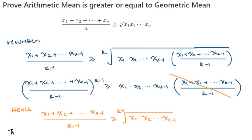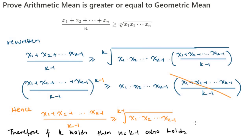Once we take the (k − 1)th root of both sides, we see that if the inequality is true for n equals k, then it's true also for n equals k minus 1.